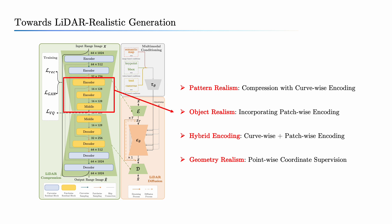Additionally, patch-wise encoding captures the complete context of 3D objects, especially larger objects near the ego-center in range images. This hybrid encoding approach, combining curve-wise and patch-wise methods, forms the basis of our autoencoder for compression.